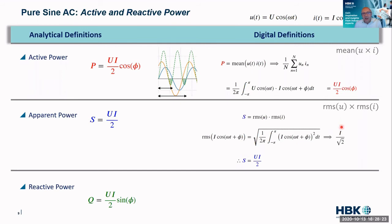So now if we take the RMS of the current and the voltage together, when we multiply them, we get UI over two, which is our standard analytical definition.